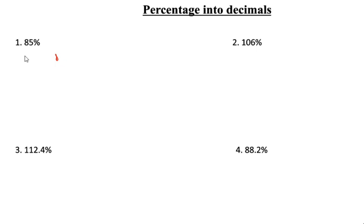85 divided by 100. 100 means 2 digits. This is also 2 digits. After 2 digits, we have to put the decimal point here. So 0.85 is the decimal.